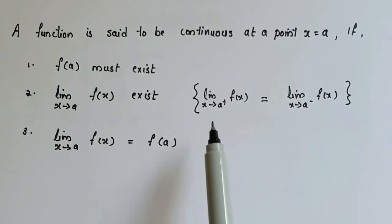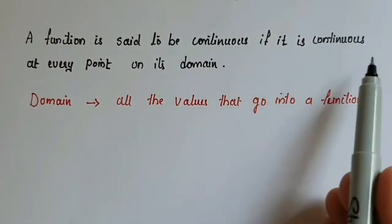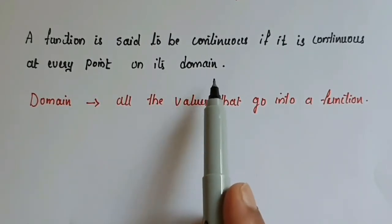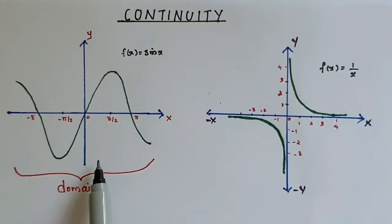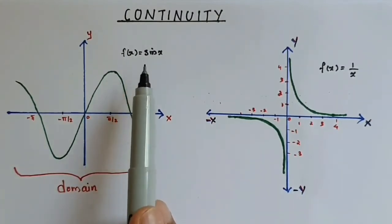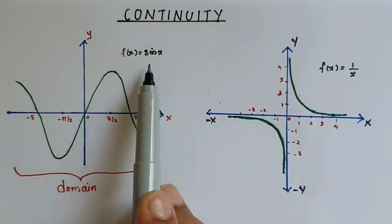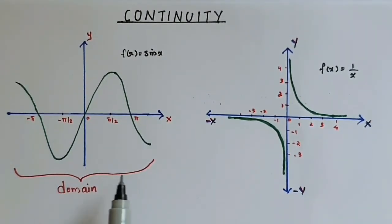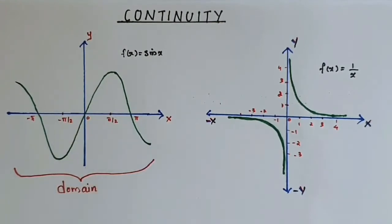A function is said to be continuous if it is continuous at every point on its domain. The domain means all the values that go into a function. Within this domain, when the function is continuous at every point and satisfies all three conditions, it is a continuous function — a graph with no broken region.